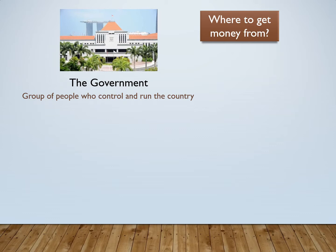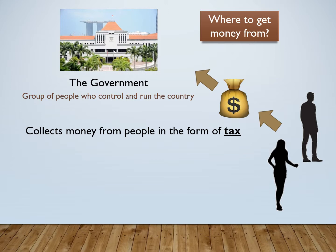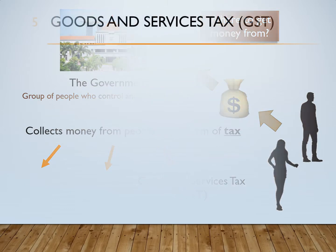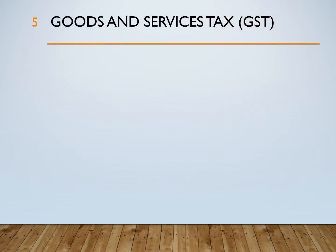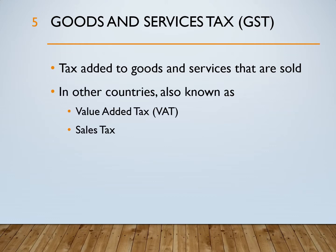The government will actually collect money from people in the form of tax. There are many different kinds of tax, but the one we are looking at today is Goods and Services Tax, which is GST. So what is Goods and Services Tax, GST? It is the tax that is added to goods and services that are sold. In other countries, it is also known as value added tax or VAT, or sales tax.